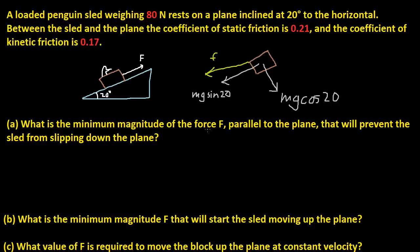For this one, it's going to be static friction, because the problem asks us to prevent the sled from slipping — which means it wants the sled to stay still. So we use static friction.